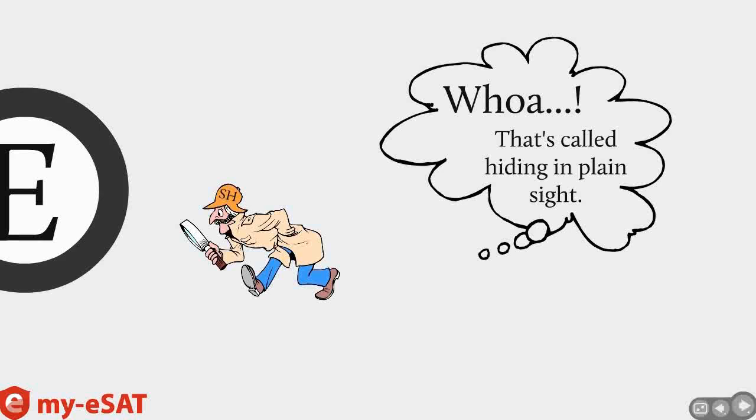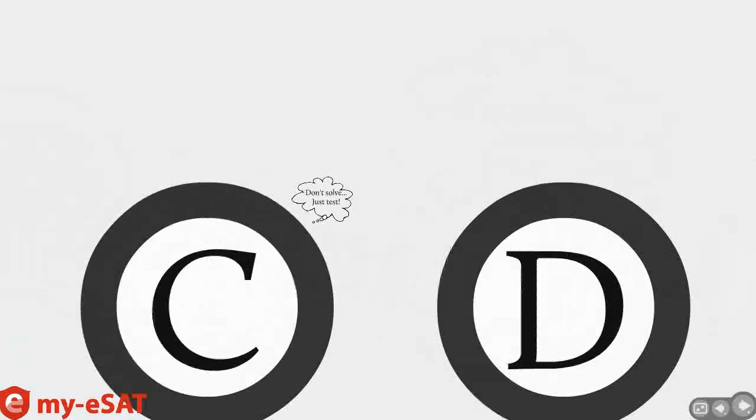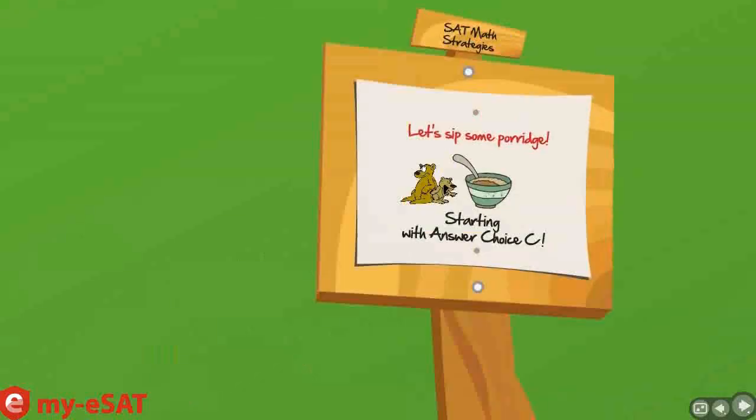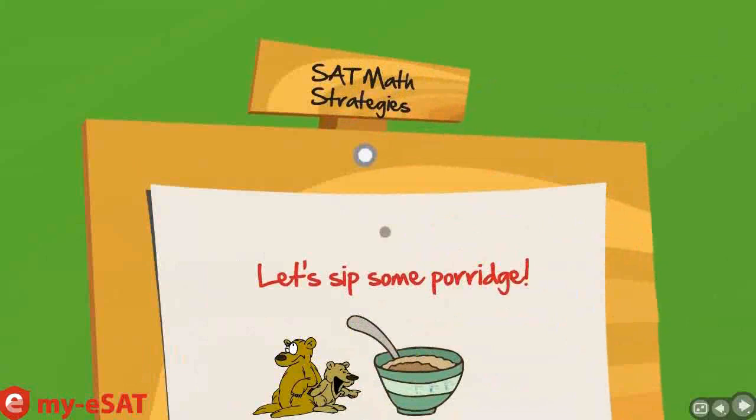But since you know the right answer is somewhere right in front of you, you can use this fact to your advantage. So instead of solving the question, why don't you test the answer choices to figure out which one is right? You're like Goldilocks when you're going to sip one porridge to see if it's right or not. If it's not right, then you'll sip on another one and so on until you find the one that is just right.